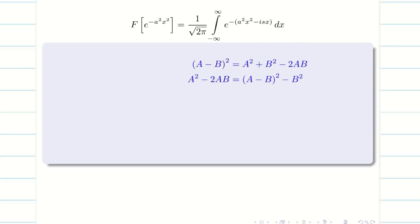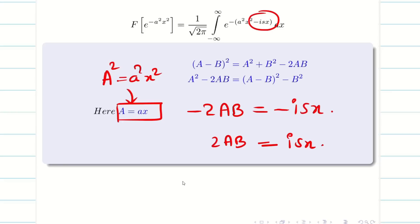Now it is easy. We know A squared is a squared x squared. So if capital A squared is a squared x squared, I am simply taking A as ax. Next, the minus 2AB term is going to be minus isx, or you can simply say the 2AB term equals isx. Both are correct. Since we found A equal to ax, and we already found A, I can easily find B. B is nothing but isx divided by 2A.